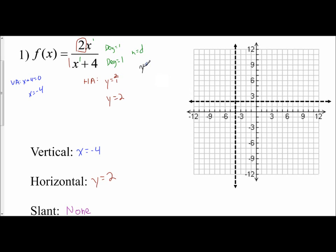To assist us without a calculator, we're going to find our y-intercept first. That allows us to see right away whether the graph is going to be in one portion or the other. When finding your y-intercept, set x equal to 0. So I have 2 times 0 over 0 plus 4, which is 0 over 4, which is 0. So I have a y-intercept at the origin, point (0, 0). That tells me the graph is going to be down in this section and up in this section.